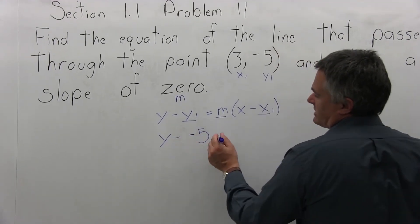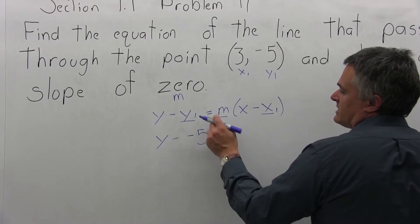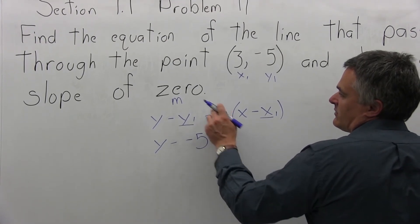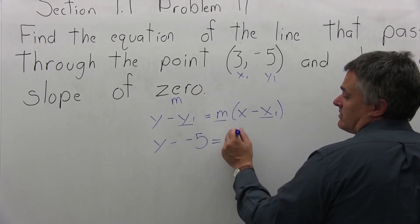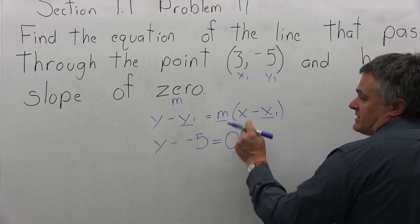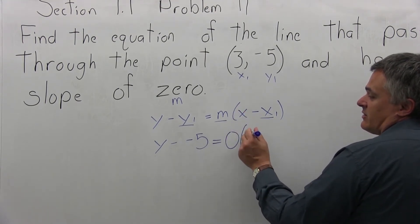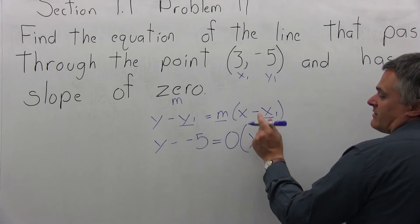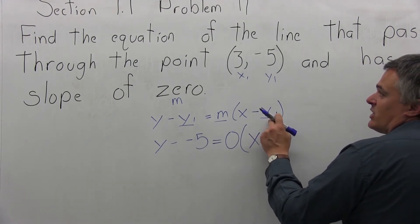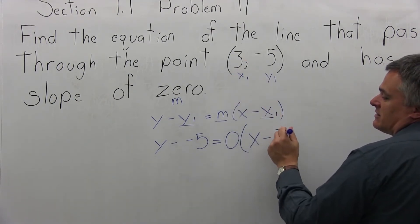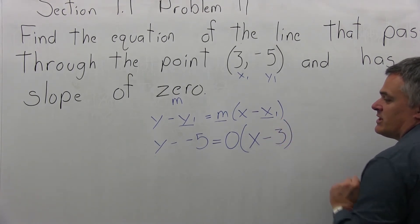And that will eventually become y plus 5. Equals is next. m for slope is 0. Start the parentheses. x does not have an underline, it will stay. Minus does not have an underline, it stays. x1 has an underline, its value is 3. And we close the parentheses.